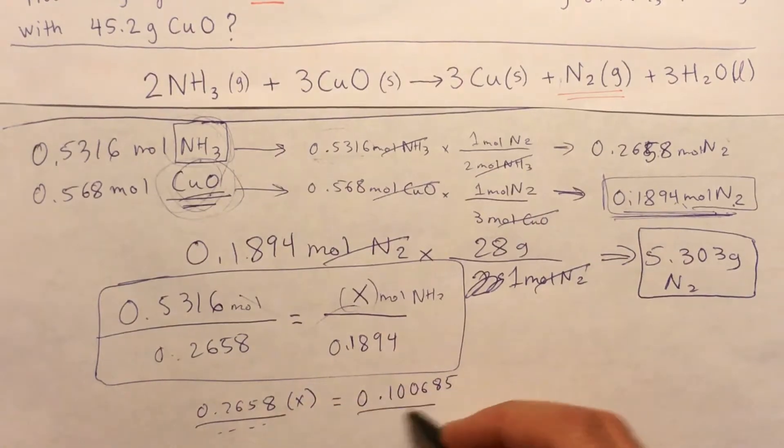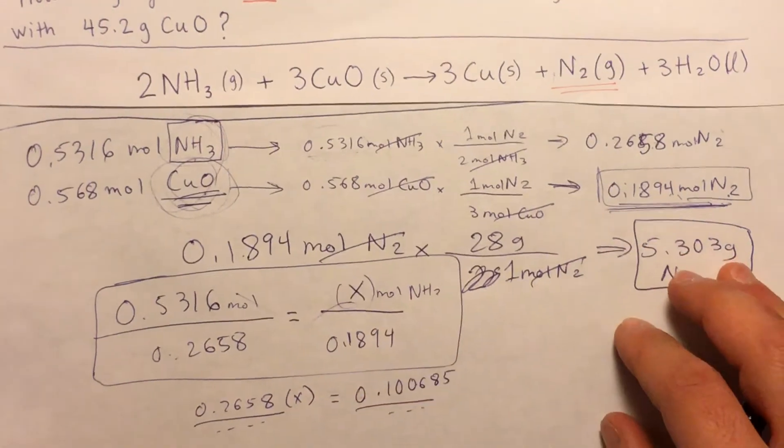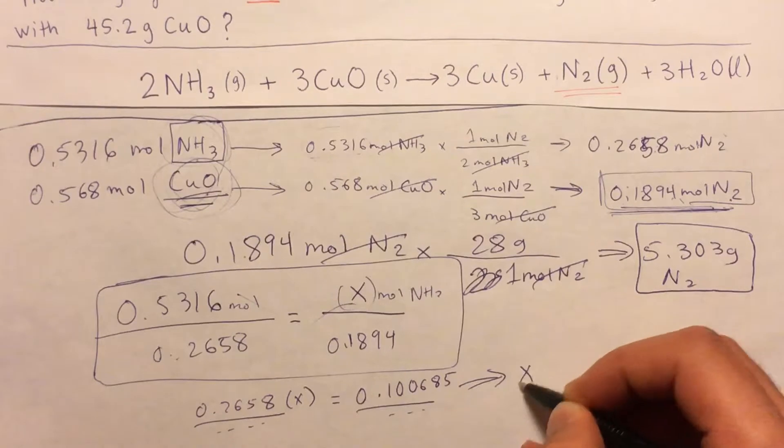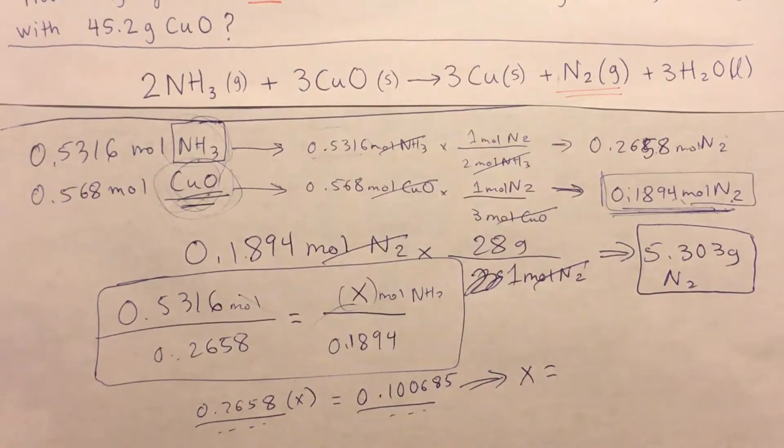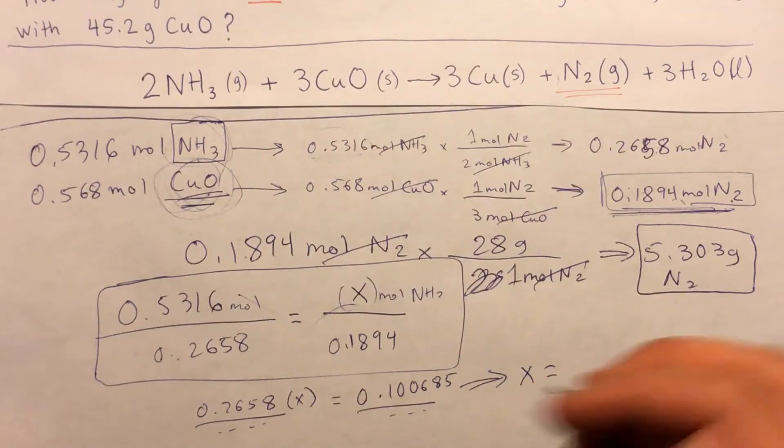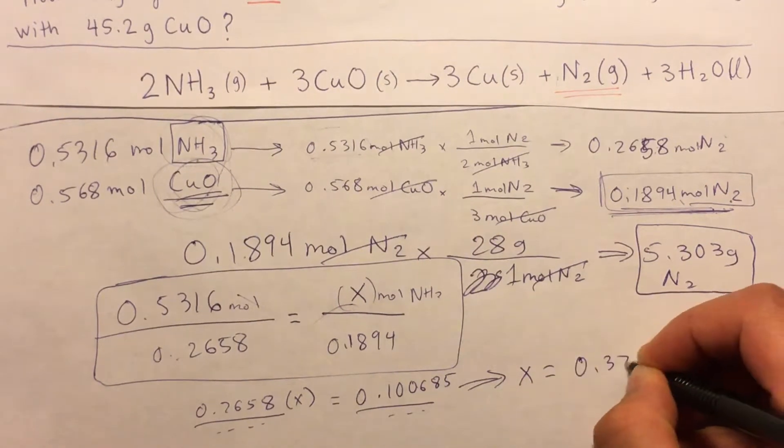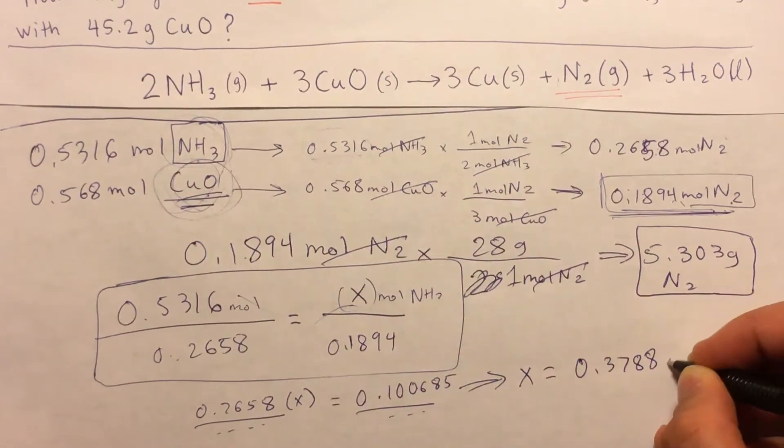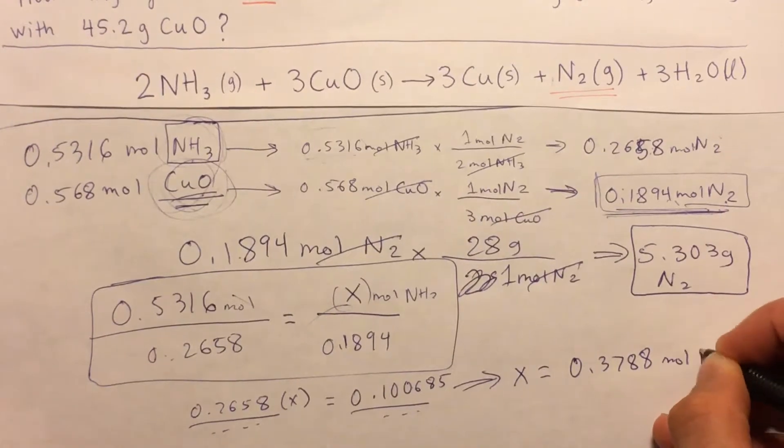Divide by this number on both sides. And then your x would be equal to, in case we're dividing by 0.2658, would be 0.3788 moles, and that moles of NH3.